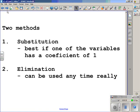There are two methods to solving systems of equations algebraically. One would be substitution, the other would be elimination. The substitution method is best used if one of the variables has a coefficient of 1, and elimination can be used basically at any time. Today we're going to focus on substitution.